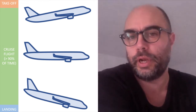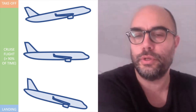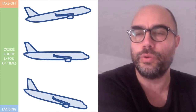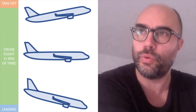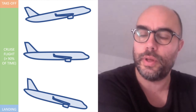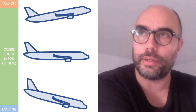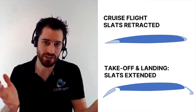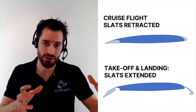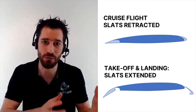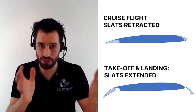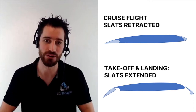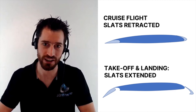90% of the time the aircraft is in cruise, so we are focused on the cruise part. That's why you have the slats and the moving parts on the wings to generate temporarily more lift and then put them back in to reduce drag for cruise flight.